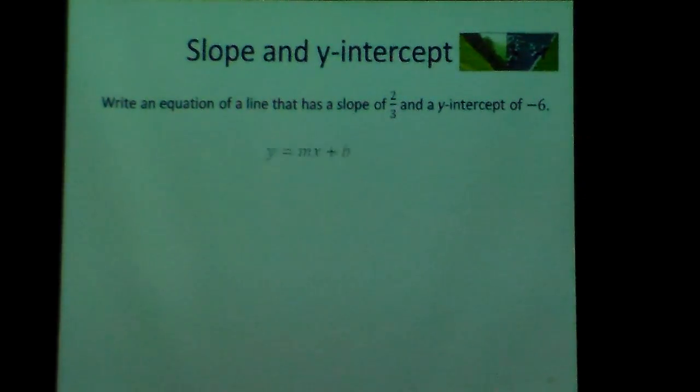First off, we're going to look at our equation y equals mx plus b. This is what we call slope-intercept form because we have a slope and an intercept.